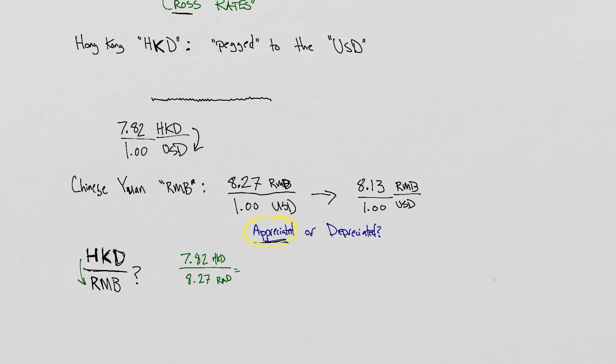To get our kind of before appreciation value of Hong Kong dollars versus Chinese yuan. So that's the cross rate. And that gives us a value of 0.94 HKD per one Chinese yuan.